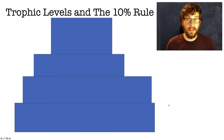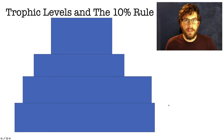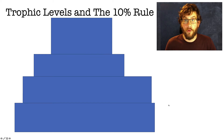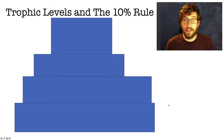Now, the trophic levels of an ecosystem and the 10% rule — something I find really fascinating. It's very straightforward and requires an understanding of the laws of thermodynamics, specifically the first law: energy cannot be created or destroyed, it can only be transformed from one form to another. For example, chemical energy stored in gasoline runs through a car, providing kinetic energy as well as sound energy.